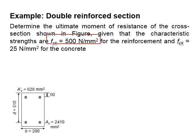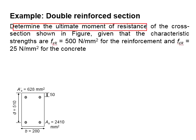The steel strength is 500 N per mm squared and the compressive strength of the concrete is 25 N per mm squared. The question asks us to determine the ultimate moment resistance of the cross section.